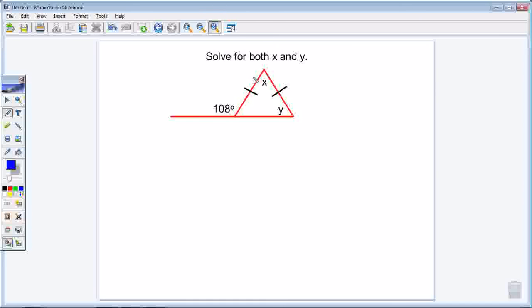The first thing I have to look at is this notation here. This tells me that these two sides are the same, so it's an isosceles triangle. This is an isosceles triangle.